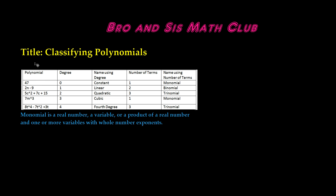So first let's take a look at these polynomials. We have 47, 2n minus 9, 5c squared plus 7c plus 15, 7m cubed, and 8t to the 4th minus 7t squared plus 3t.